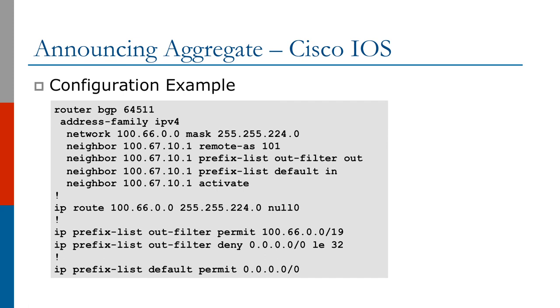An inbound filter called default is applied to the same neighbor, permitting only the default route from this neighbor.